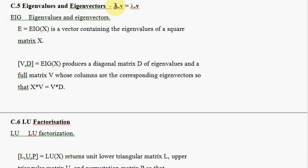In other words, the product of A and V, which we can see is going to be a vector, would be the same as the scalar lambda multiplied by that same vector V. So this is the property that we're looking for, and these properties are extremely important in linear algebra. There are several problems you're able to solve if you have your objects having this set of properties connected in this particular way.